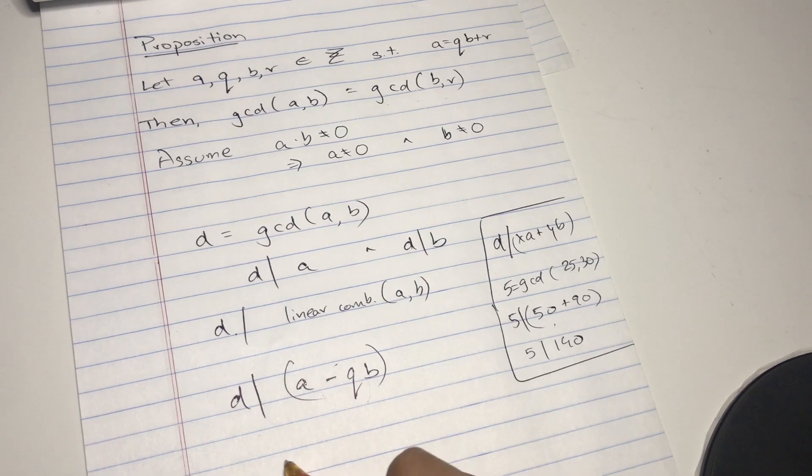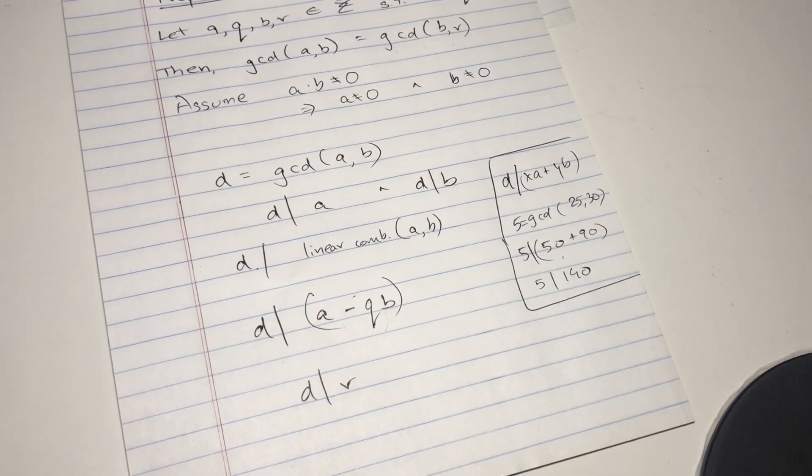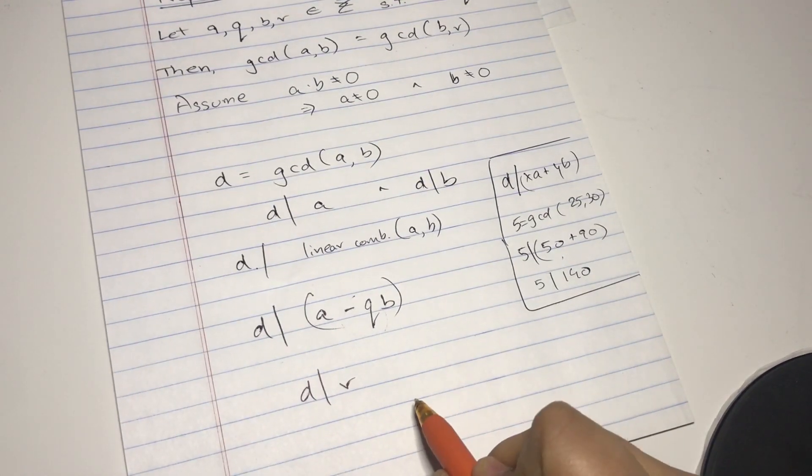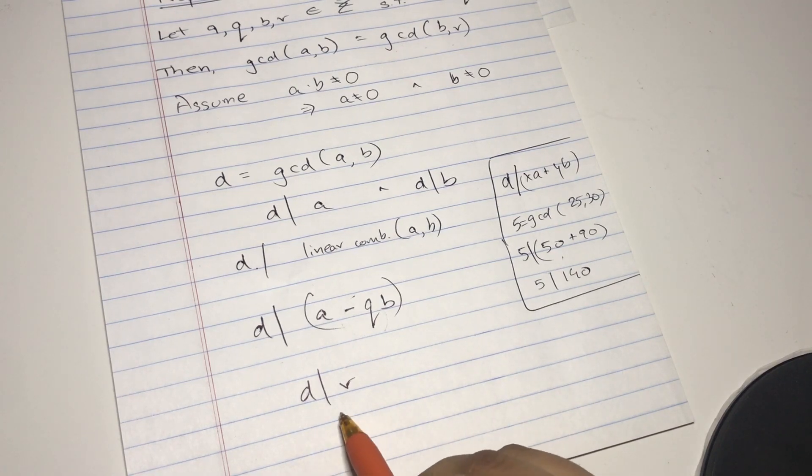But this just proves that d is a common divisor of r. We don't know if it's... yeah, we just know that.